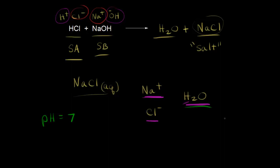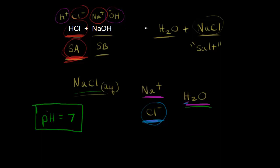You might think that the chloride anion could function as a weak base and take a proton from water. However, that's not really going to happen because Cl− is the conjugate base to HCl, and we know that HCl is a strong acid. The stronger the acid, the weaker the conjugate base. So the chloride anion can't really take protons from water, and the pH is unaffected. The pH of our sodium chloride solution is equal to seven. Salts formed from a strong acid and a strong base form neutral solutions with pH equal to seven.